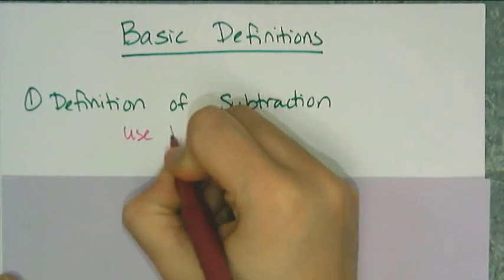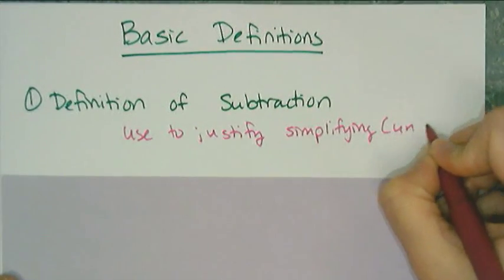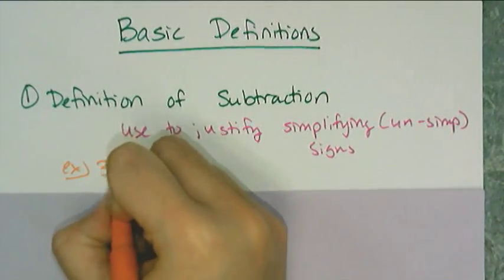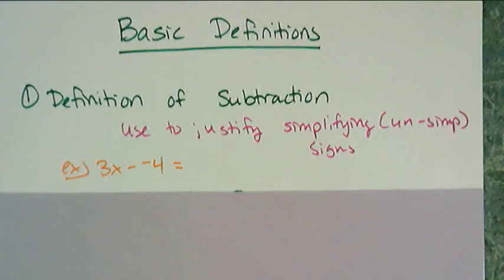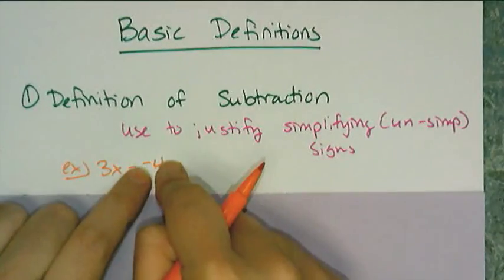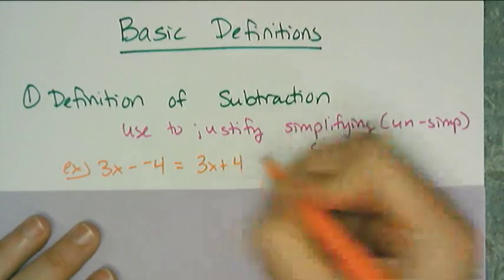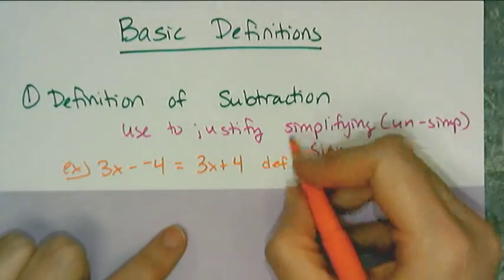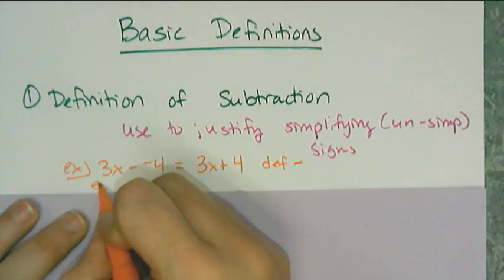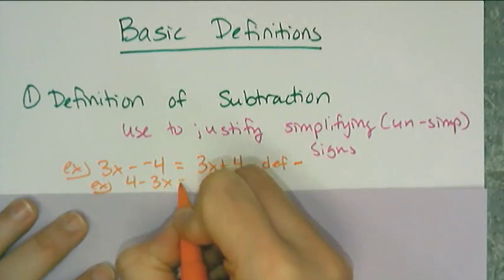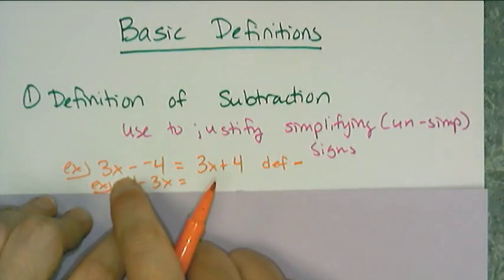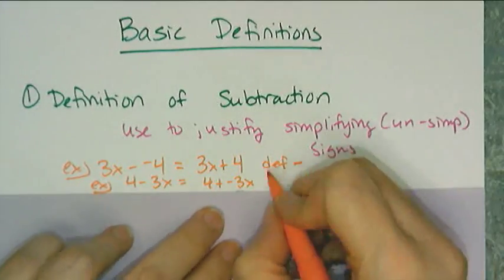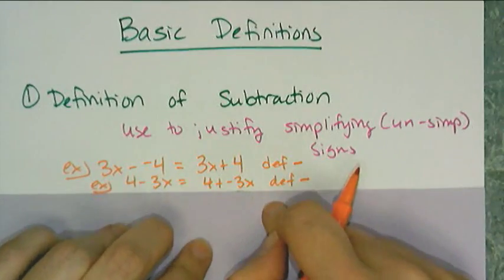We'll use the definition of subtraction to justify simplifying or unsimplifying signs. For example, 3x minus negative 4 has a minus-negative, which you can't leave. The justification for combining them into a plus is the definition of subtraction. We also use it the other direction: if I have 4 minus 3x, I can't just rearrange subtraction, so I rewrite it as 4 + (−3x) first, which is also the definition of subtraction.